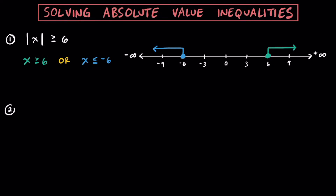For a second example, let's try solving the absolute value of X is going to be less than 0.5, or one-half. Writing this as a compound inequality, we drop the absolute value symbols and say X is going to be less than 0.5. But whenever we have less than, this is actually going to be an AND instead of an OR. For our other statement, we flip the less than to make a greater than, and instead of 0.5 we write negative 0.5. The values for X that make this work are going to be between negative 0.5 and positive 0.5.